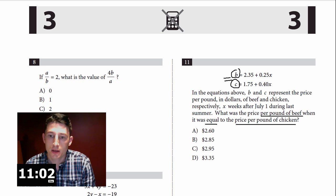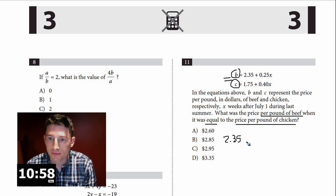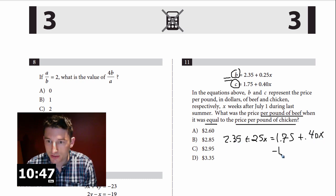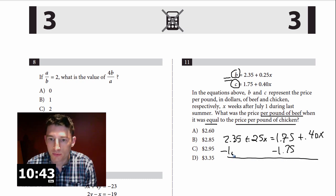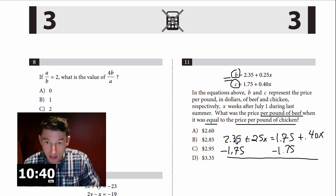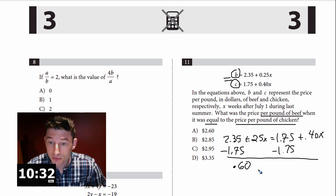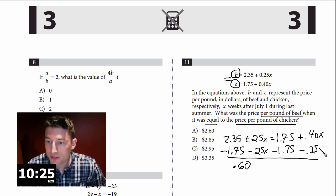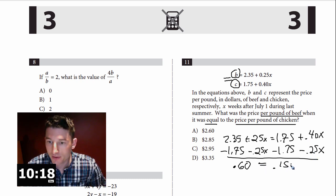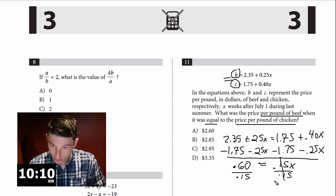So let me write that out: 2.35 + 0.25x = 1.75 + 0.40x. Let's get things on the right side — minus 1.75 — and 2.35 minus 1.75 is 0.60. Then minus 0.25x from this side. So 0.40 minus 0.25 is 0.15x. I'm going to divide by 0.15 — don't worry about the decimals because it's just 60 divided by 15, which is 4. So x equals 4.